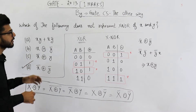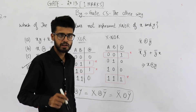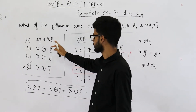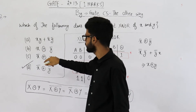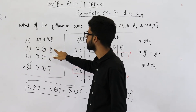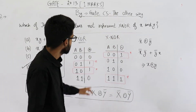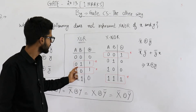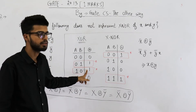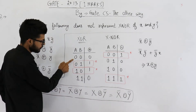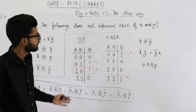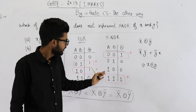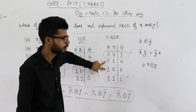Now let's also prove it in another way — a more intuitive method. Option B says X X-OR Y complement. The X-OR gate outputs 1 when both inputs are different: on 0,1 or 1,0 it outputs 1. If both inputs are same — 0,0 or 1,1 — it outputs 0. The X-NOR gate is completely opposite: if inputs are same it outputs 1; if inputs are different it outputs 0.